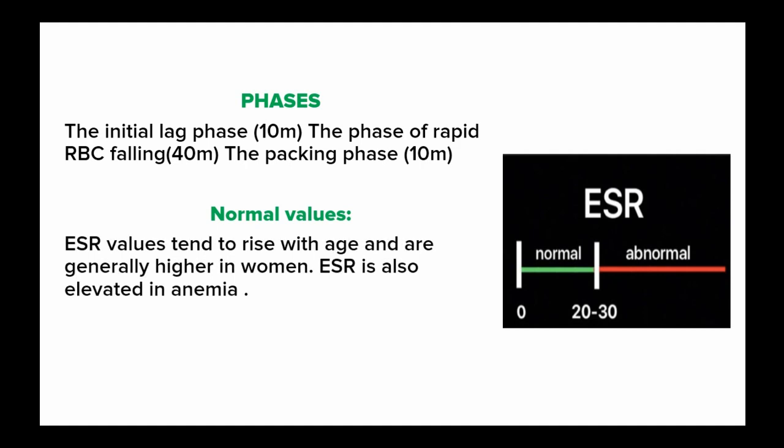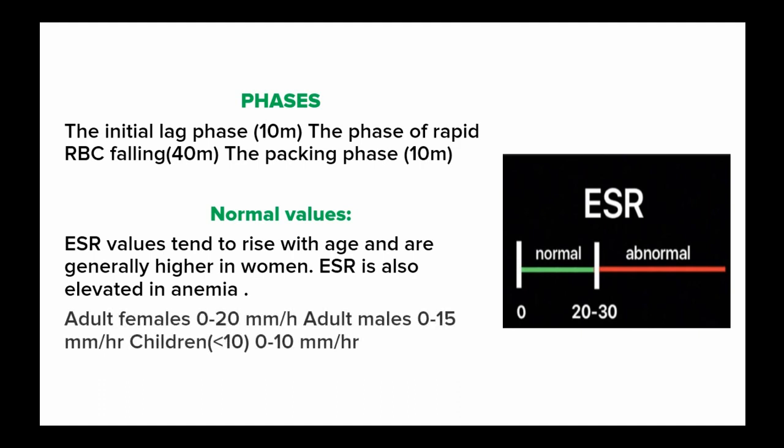ESR values tend to rise with age and are generally higher in women compared to men. In an adult female, the normal range is 0 to 20 mm per hour; in adult males, 0 to 15 mm per hour; and in children, normal values range from 0 to 10 mm per hour. Anything above 30 mm per hour is considered abnormal.